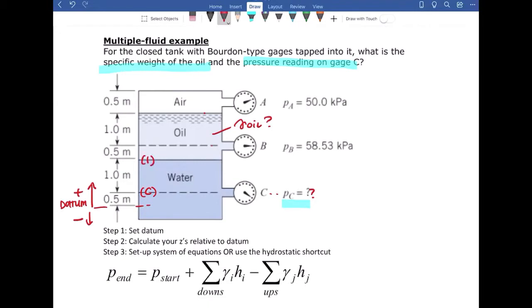The next elevation above that is going to be at pressure gauge B. So we'll label that B. And then again, at the very top of oil, we have another elevation that we need to label.